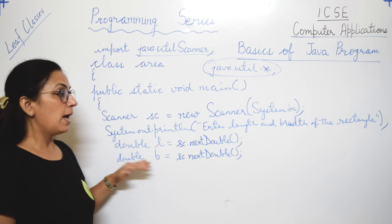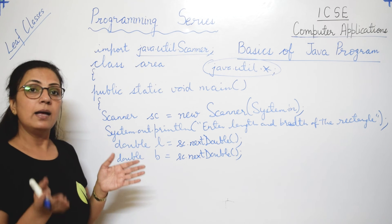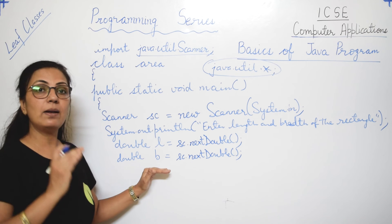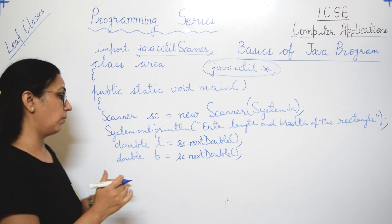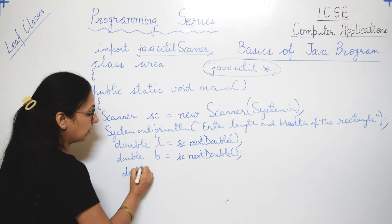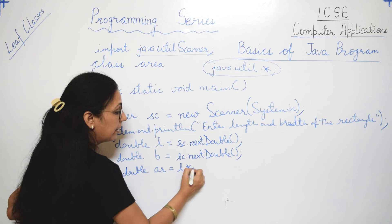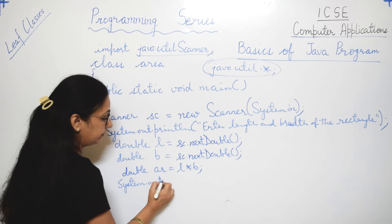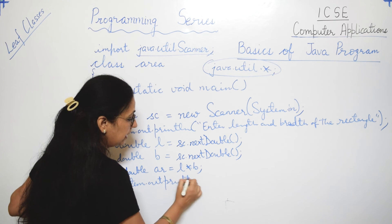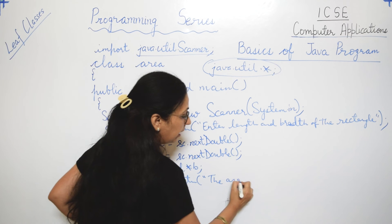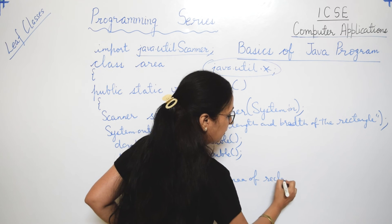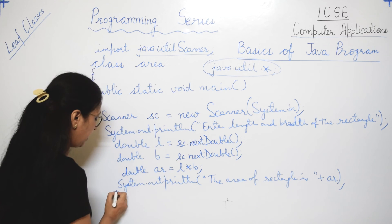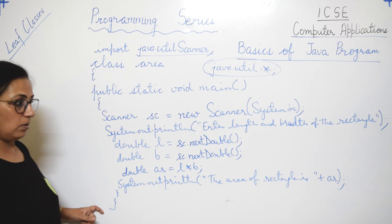Instead of assignment, we have now entered the values — these values will be provided when the program executes. Then calculate the area in variable 'ar' as length multiplied by breadth, and display the output: System.out.println("The area of rectangle is " + ar). Then close main and close the class. This is the same structure as the previous program but with user input.